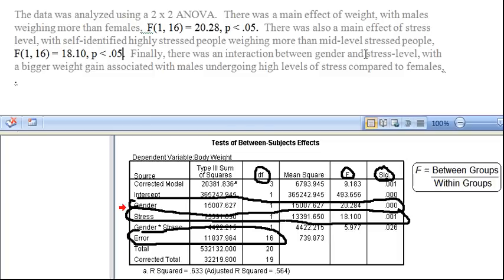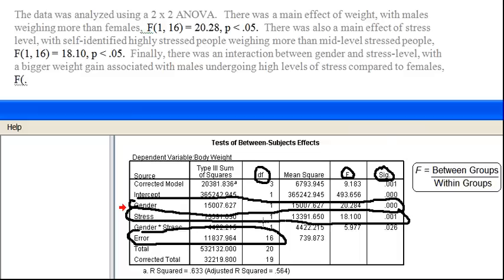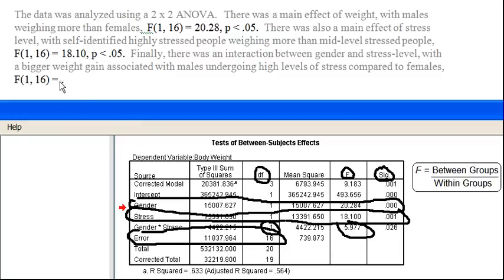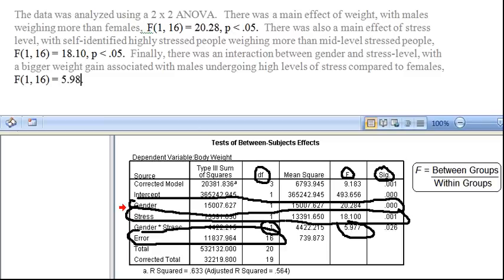Okay, finally, there was an interaction between gender and stress level, with a bigger weight gain associated with males undergoing high-level stress compared to females. Okay, so let's report the results. That's F. Our degrees of freedom for gender by stress is 1 for that between groups. Degrees of freedom for within is 16. The F-value is 5.98. And the p-value is less than .05. All right, and last thing, you want to italicize all of your F's since this is an inferential statistic.